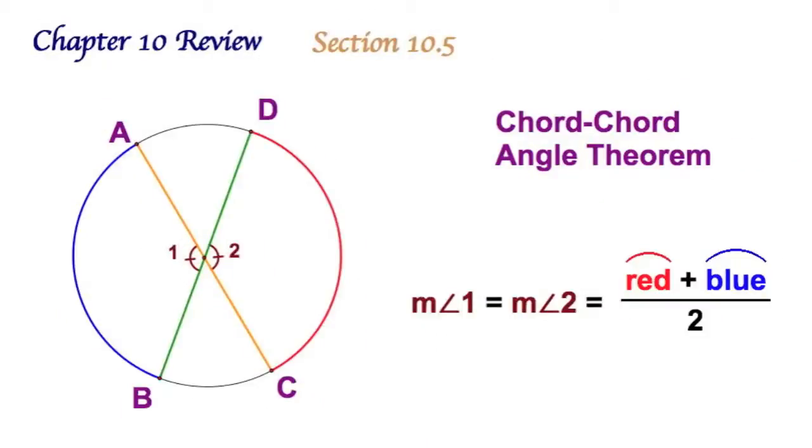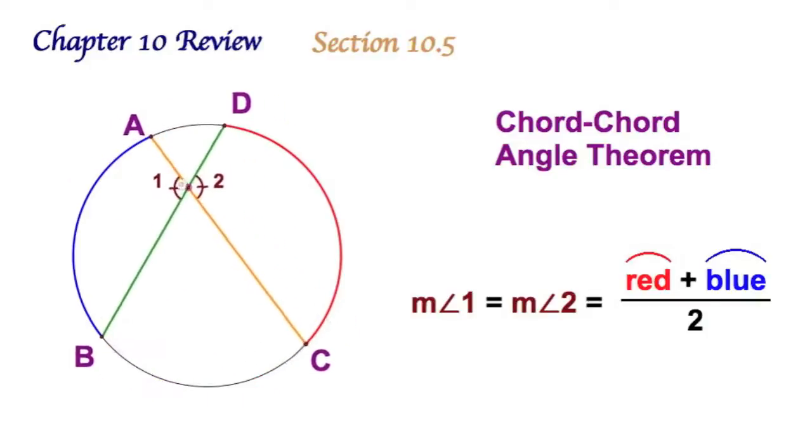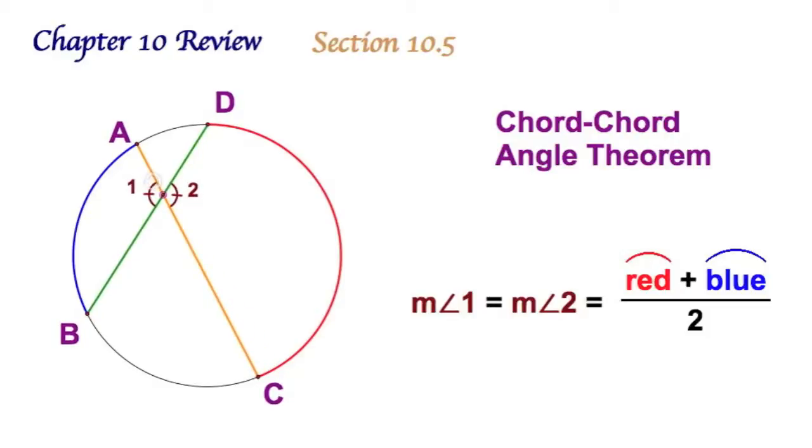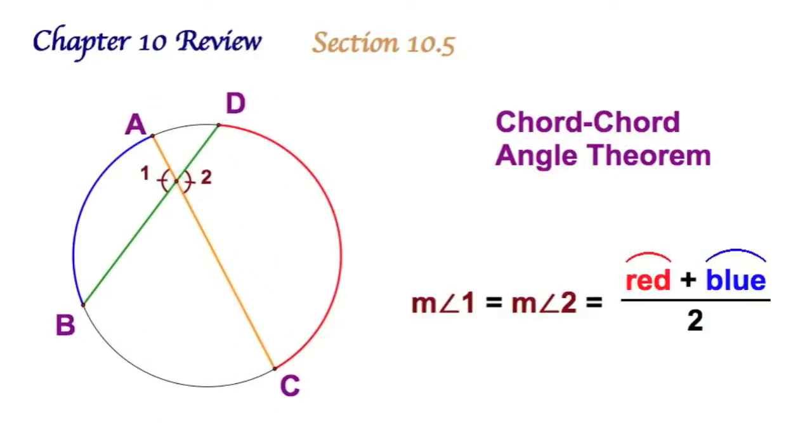Well the next angle-arc relationship in 10.5 is called the chord-chord angle theorem. I see right here I've got two chords that cross. I've got a pair of vertical angles. Those brown angles are congruent. Right now the arcs might be, but now they're not. So I look at this - well, they're intercepting two different arcs, but these two brown angles have to be equal, so they share the degrees. Remember, the angle is on the inside - it's on the inside of the circle. So that angle is the average: red plus blue divided by 2.